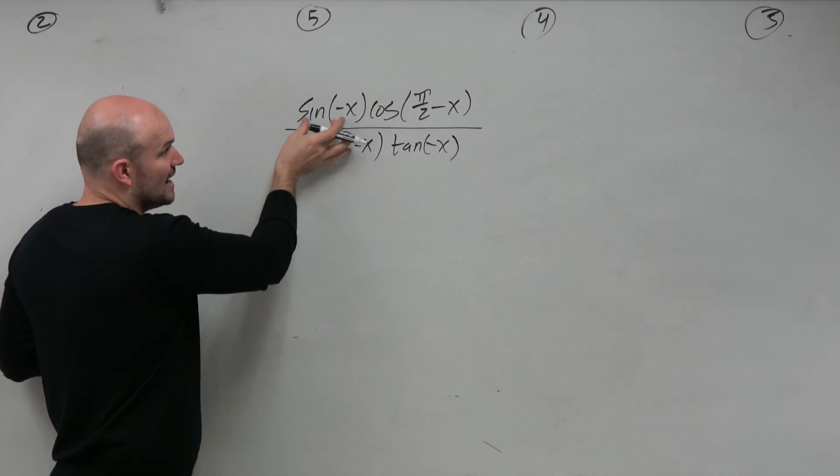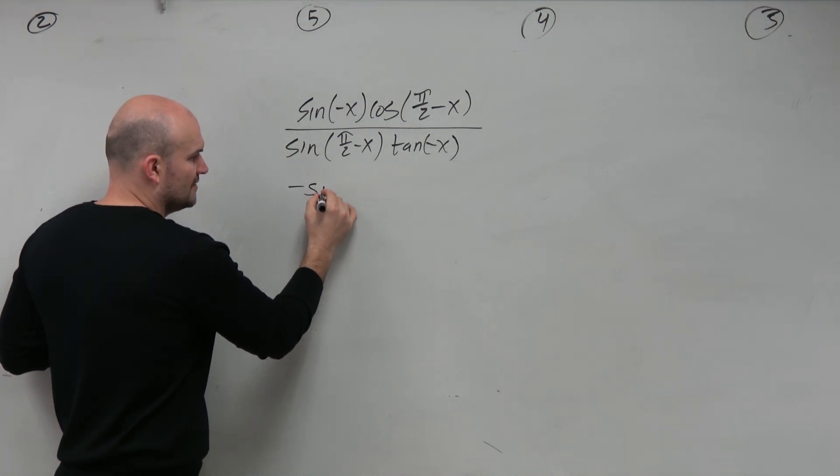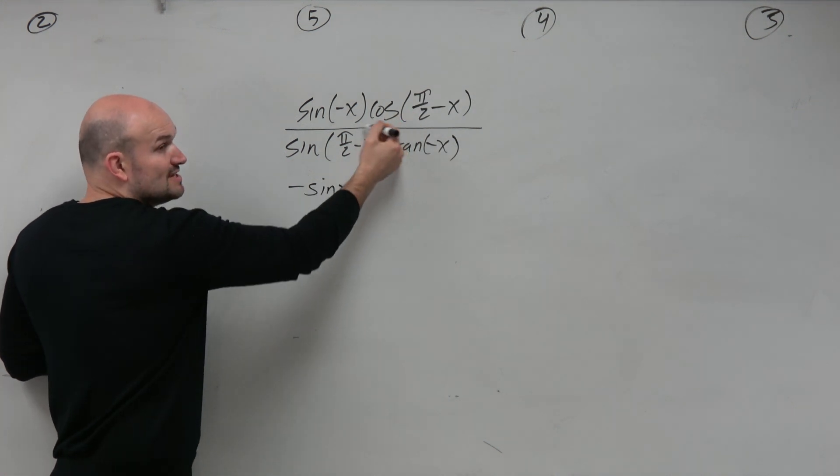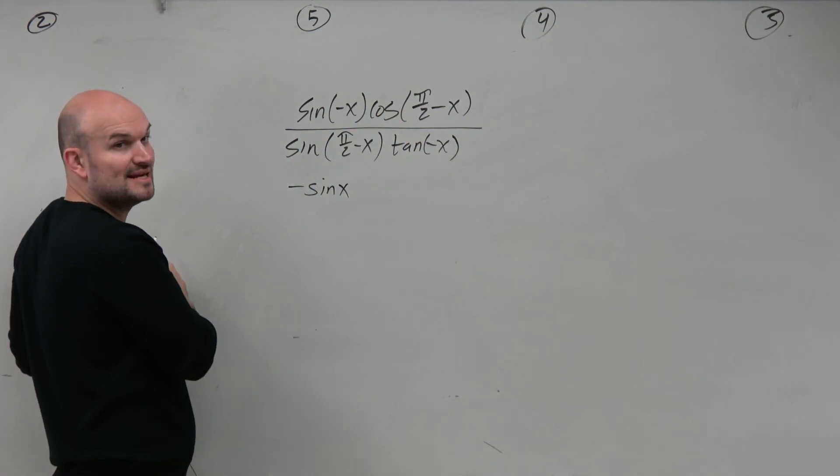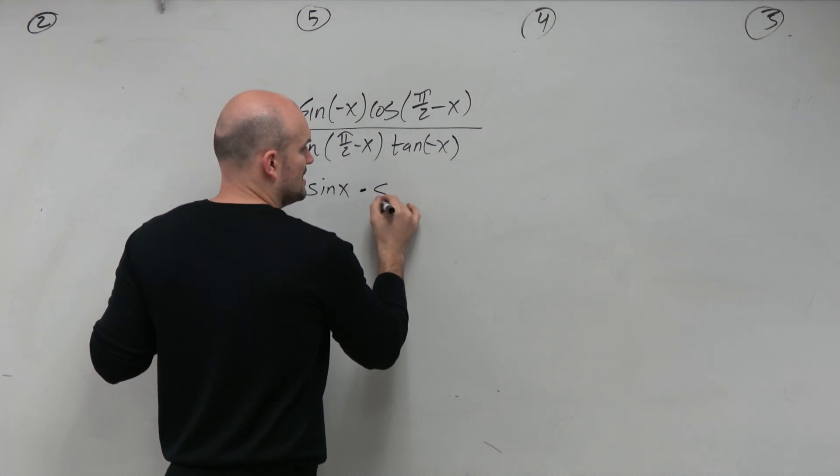So using the even, odd identities, I recognize the sine of negative x is just going to be negative sine of x, right? Because the only two that are the same are cosine and secant. The cosine, I see, I recognize that pi over 2 minus x. Using co-function identities, I recognize that to be sine of x.